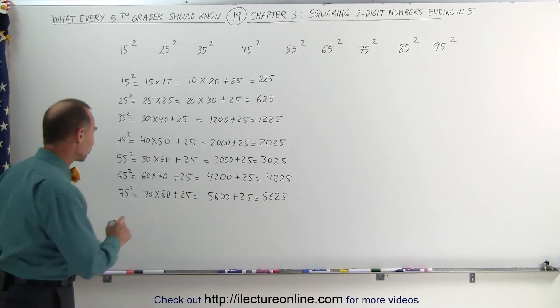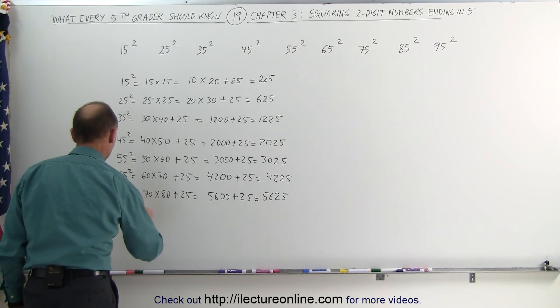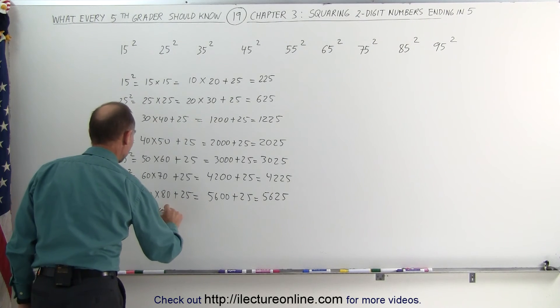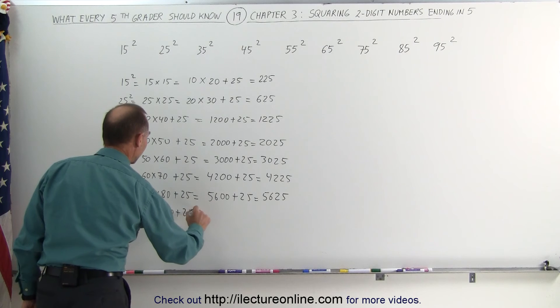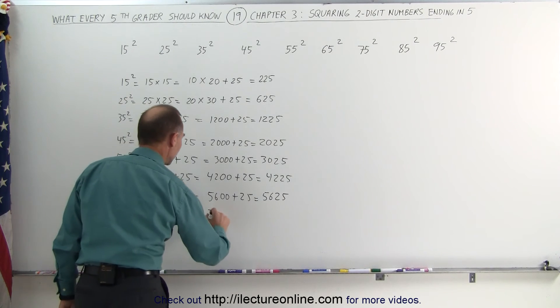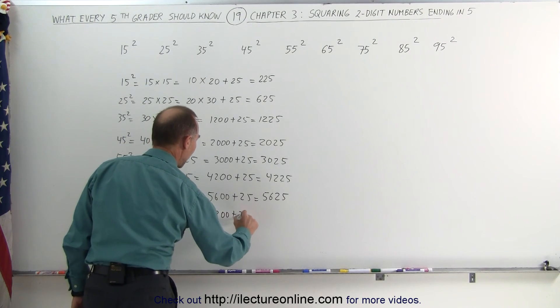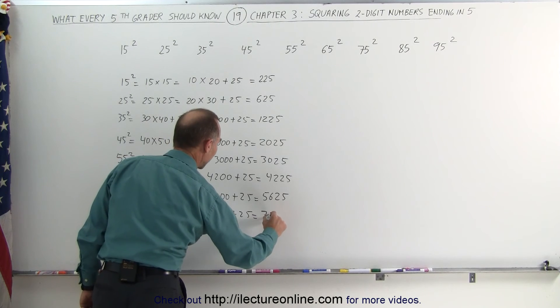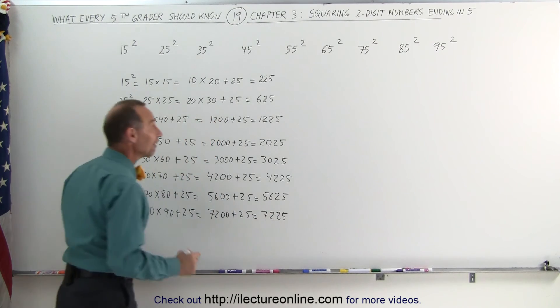How about 85 squared? 85 squared, that's the same as 80 times 90, add 25 to that. 8 times 9 is 72, plus 2 zeros, add 25, that's 7,225.